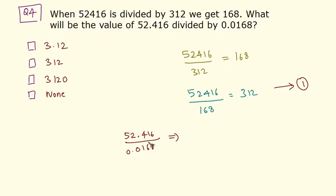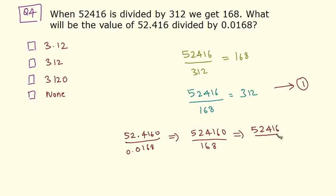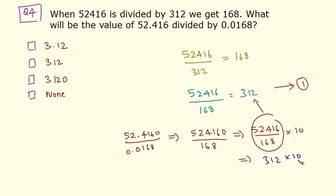This is equivalent to — if I put a 0 here in the numerator, the digits after the decimal point in the numerator and the denominator become the same. So I can directly remove the decimal point, giving 524160 by 168. This is similar to our equation 1. This can be written as 52416 by 168 times 10, and we know the value of this is 312, so this is 312 into 10 which is equal to 3120. So option C is our answer.